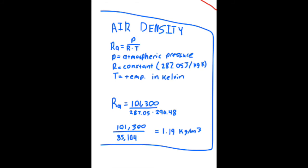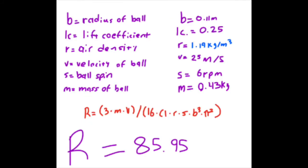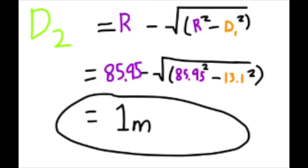So, and then factoring that air density into the equation, we get a curvature radius of 85.95. And then we can plug that finally into our final equation here, which gives us the actual D2 value, which is one meter.